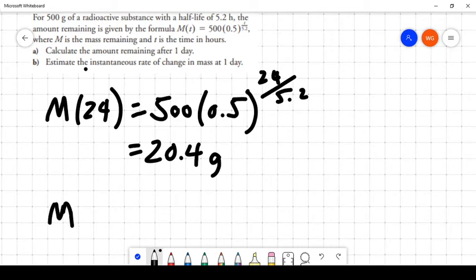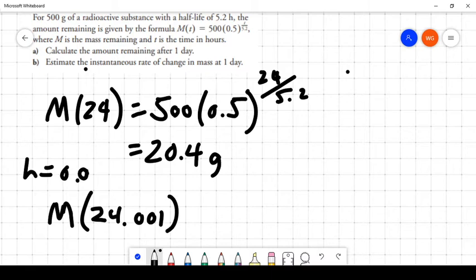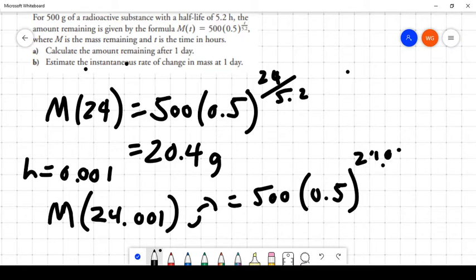And what we're going to evaluate is M(24.001). So in other words, we're going to use an h value of 0.001 as an estimate for instantaneous rate of change. And so M(24.001) is going to equal 500 times 0.5 to the power of 24.001 over 5.2. I'm going to take 24.001 and divide it by 5.2, and I get 4.61557. I'm going to take 0.5 to the power of that number, and I get 0.040791802. And then I'm going to times the result by 500, and I get 20.395.